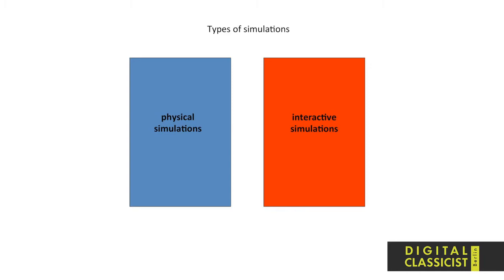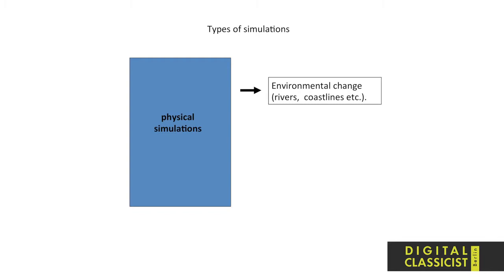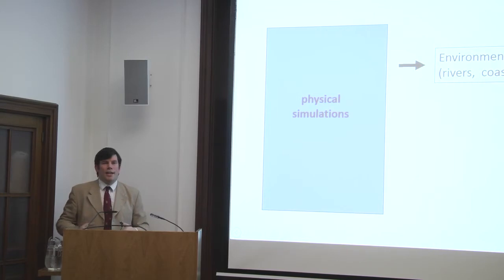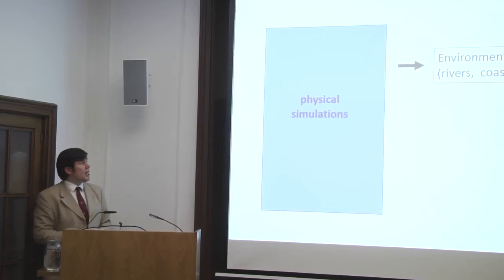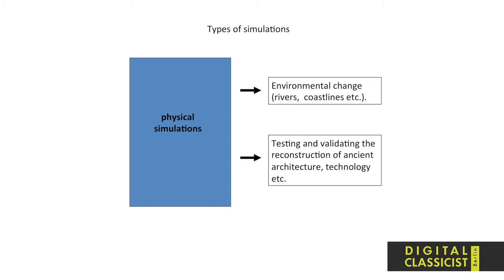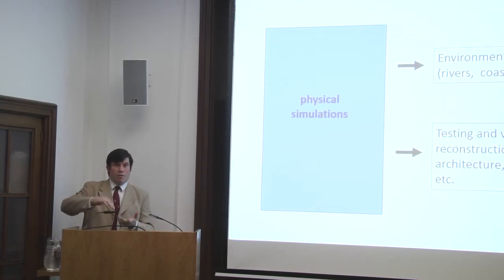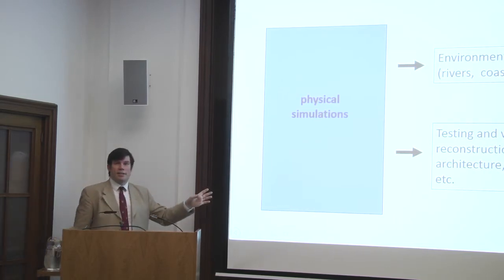Simulations are usually grouped into physical simulations and interactive simulations. Physical simulations allow you to predict the course of environmental change — put data into a model and it will show you how coastlines change, things like that. And since the basic laws of physics are not prone to sudden changes, physical simulations also allow you to validate the reconstruction of technology, of architecture, of whatever. If you want to know whether a wall had 27 stories or just three and you run a physical simulation, it will probably tell you that anything above three stories would topple over.